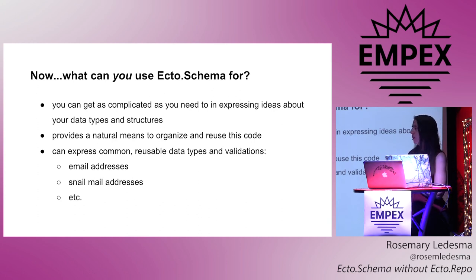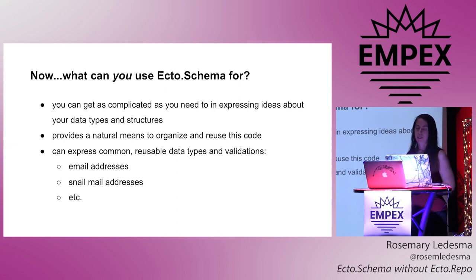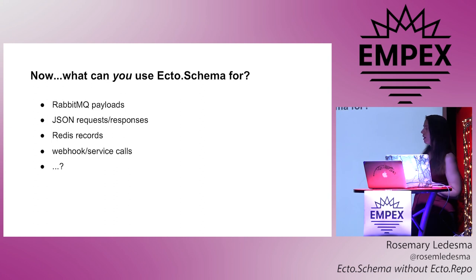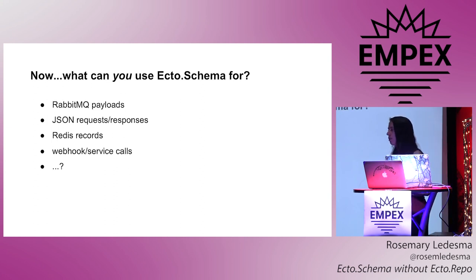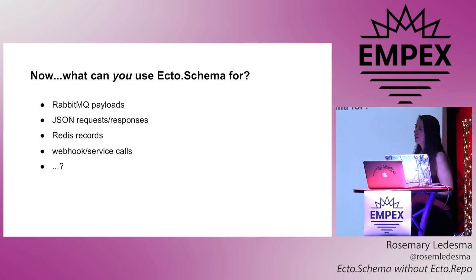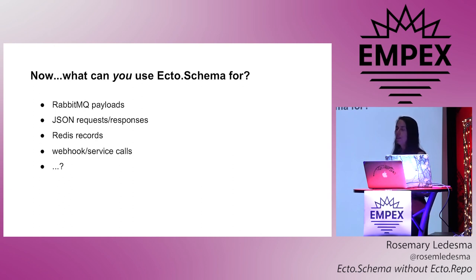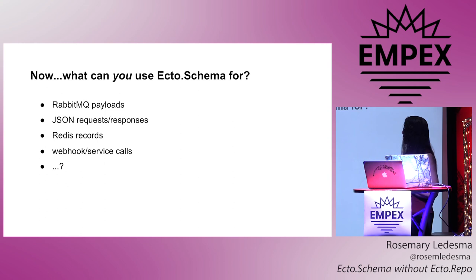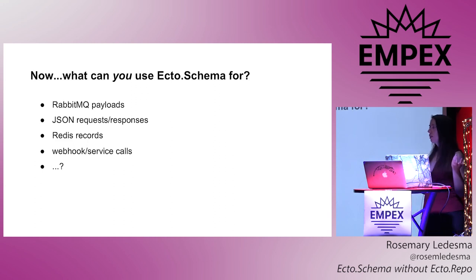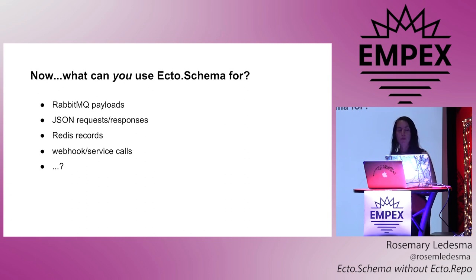Same with validations — I wrote a custom email validator and we're probably going to open source that, because why would you want to rewrite it? Some things I've used this for: formatting data to insert into RabbitMQ, because RabbitMQ doesn't really care about structure but you may care about standardizing it; JSON request/response handling; Redis, where you also don't have enforcement of structure; and calls to other APIs where you might want to enforce a standard using this tooling.